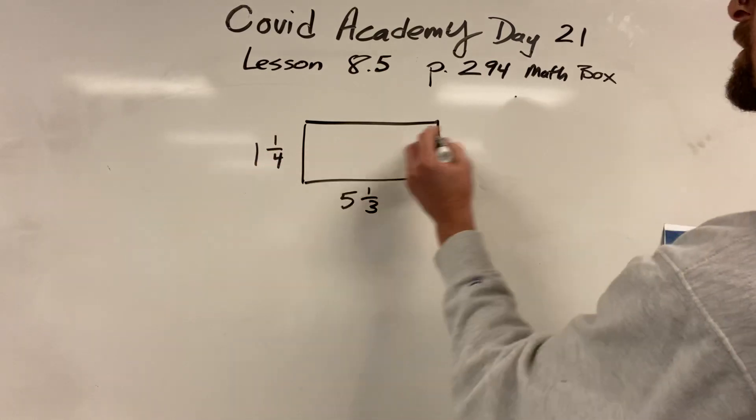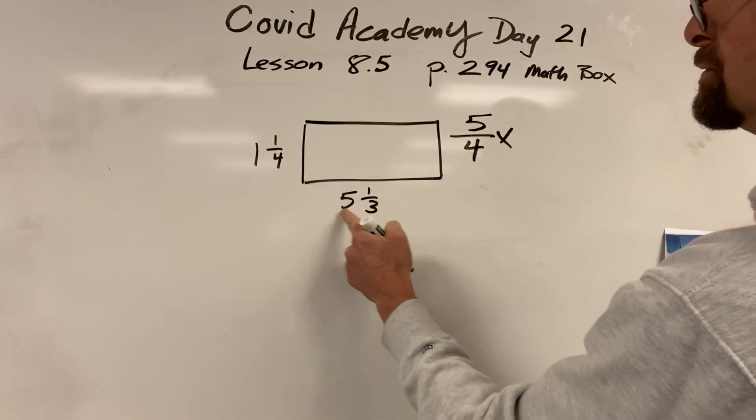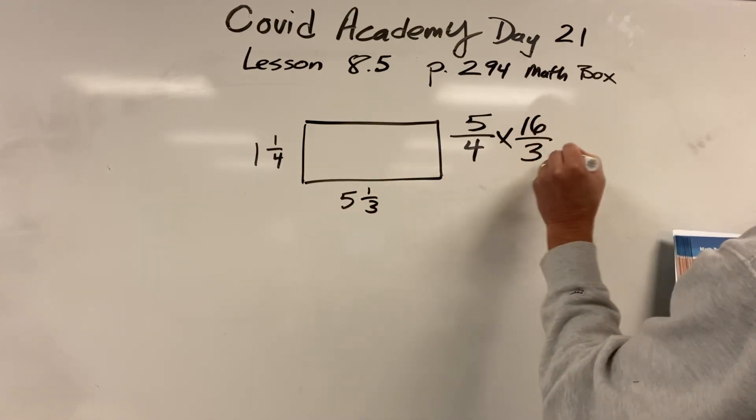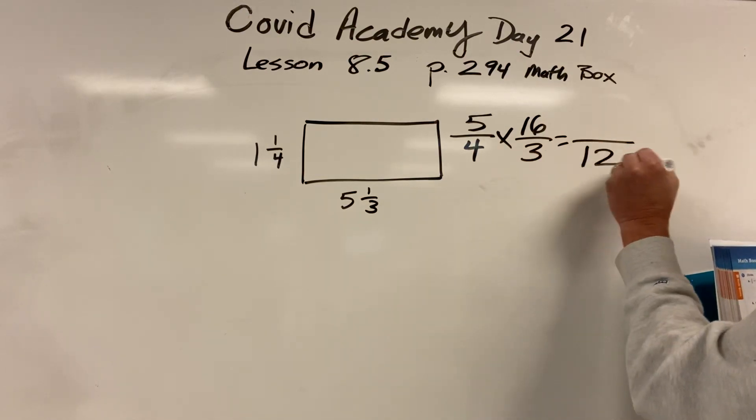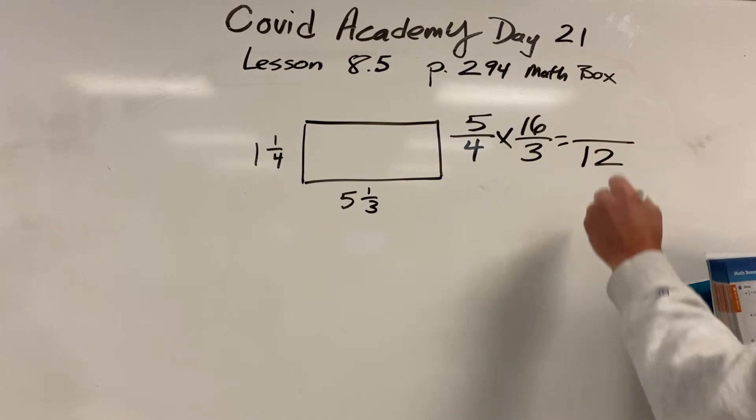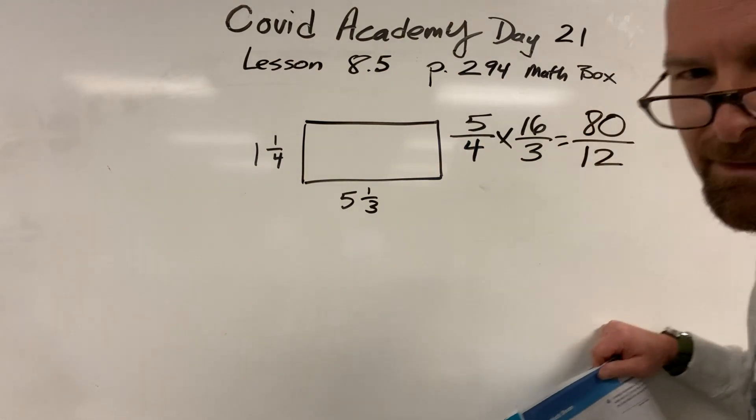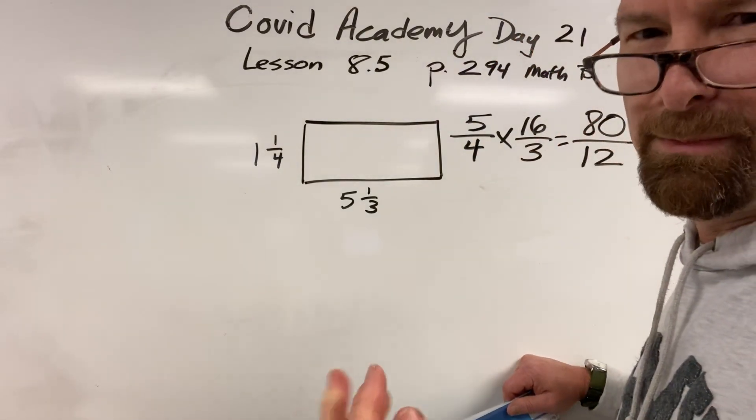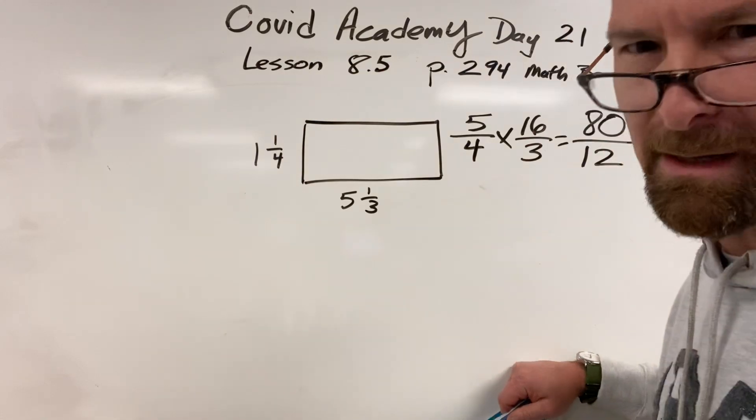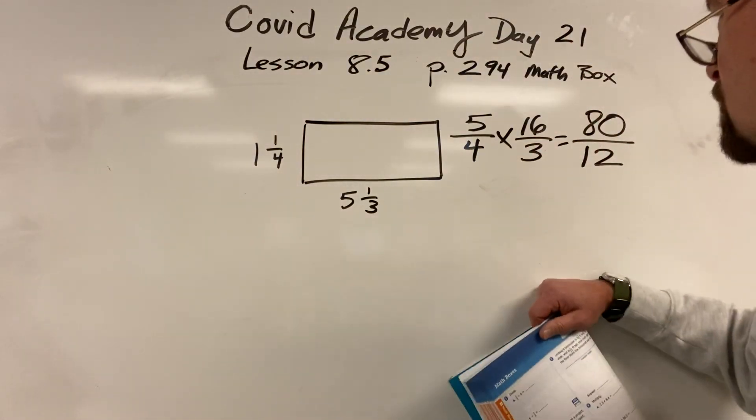Let's make them impropers. That's 4 times 1 is 4. One more is 5. So 5 fourths times 3 times 5, 15, 16 thirds. It's going to make kind of a mess, but 16 times 5, I'm pretty sure that's 80. So then you got 80 twelfths. You can't leave it like that, right? It's like pulling your pants up after you come out of the bathroom. You can't just wander around with your pants half down. Don't do that. So you can't leave it like that.